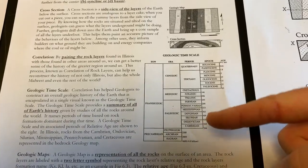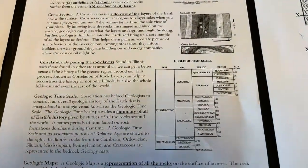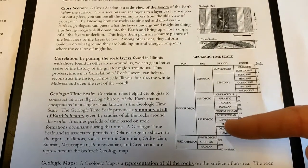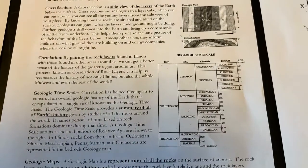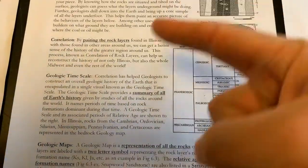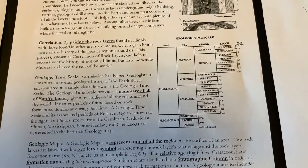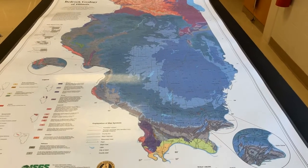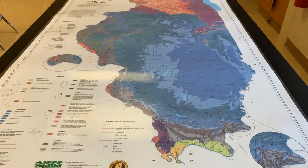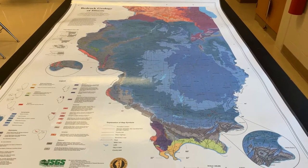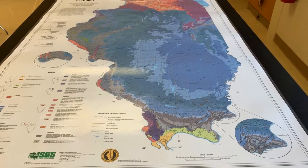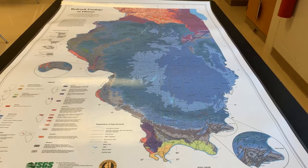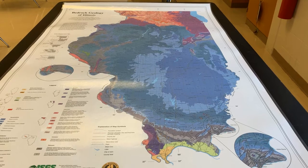The geologic time scale is a history of the Earth from its very formation all the way up through today. Much of Illinois's history takes place in the Paleozoic, based on the rocks we see there, with some Cretaceous age rocks and also some younger rocks. The oldest rocks are on the bottom and the youngest are on the top — they tell us the history of Illinois, and when paired with everything else studied around the world, they give us a broad picture of what was going on.